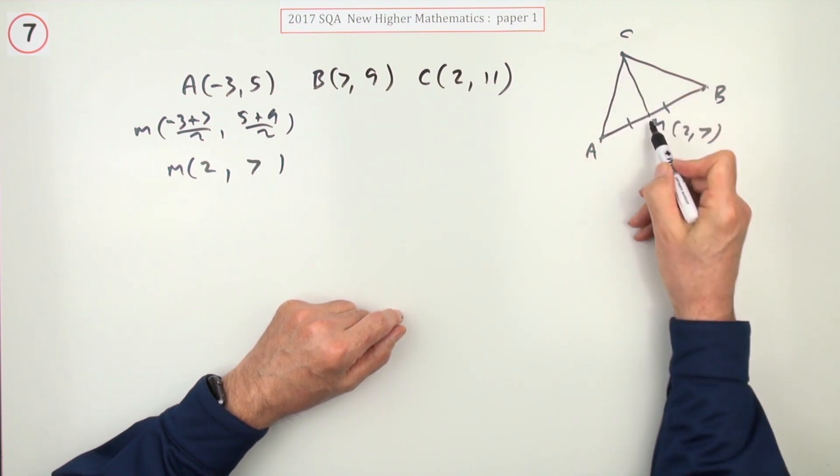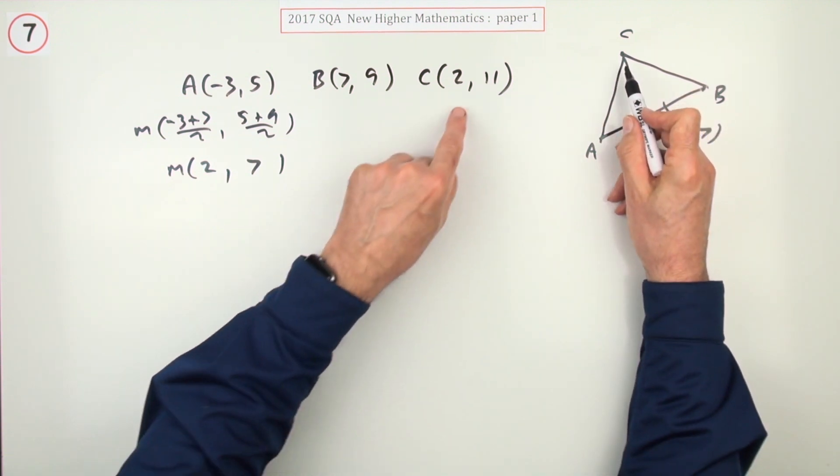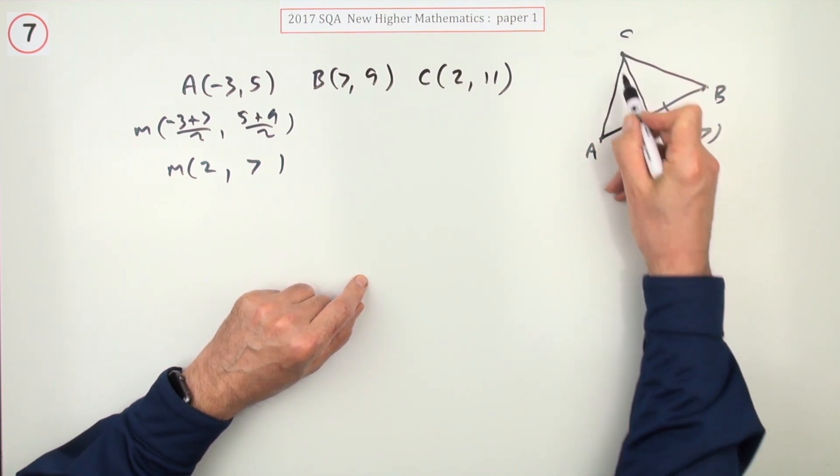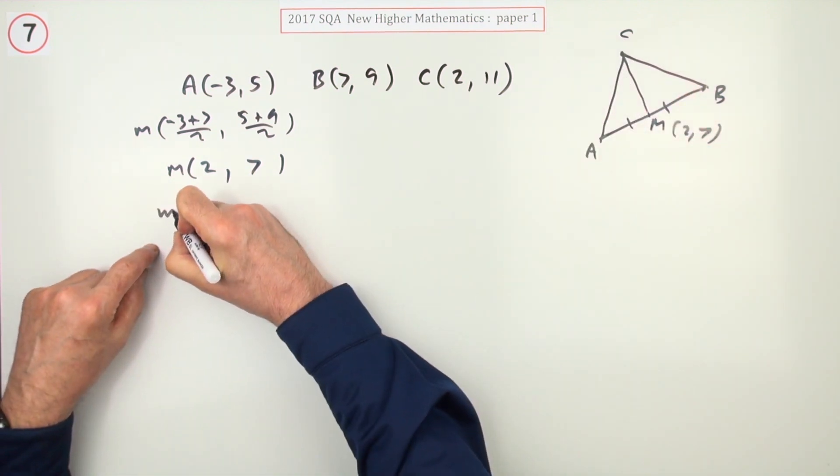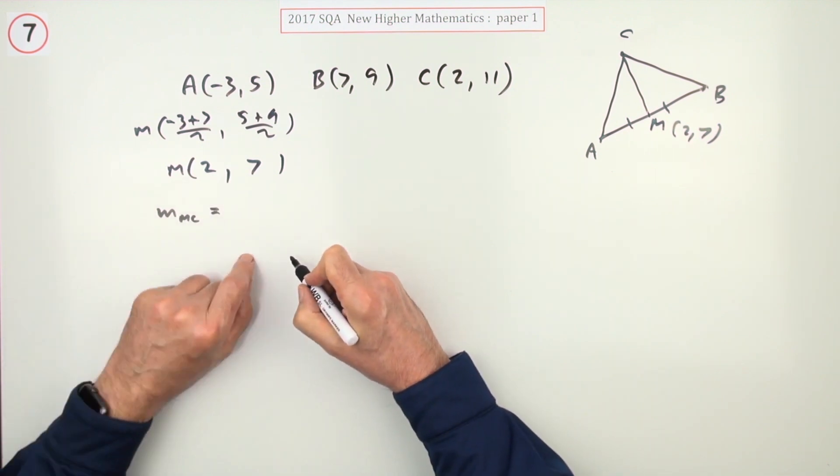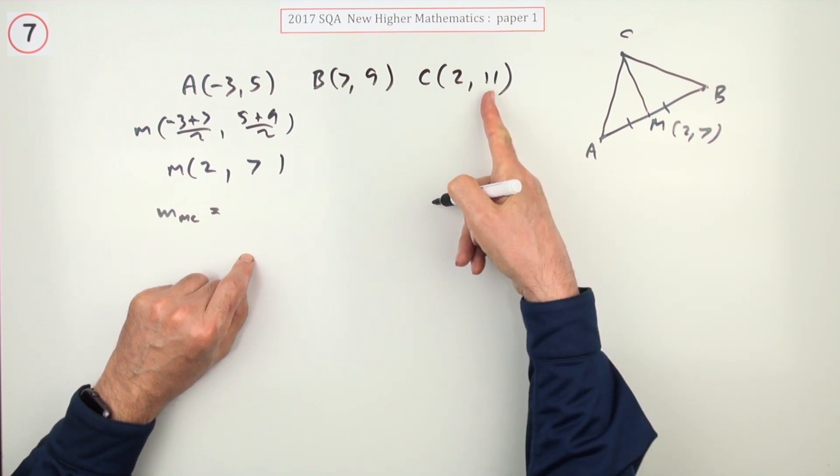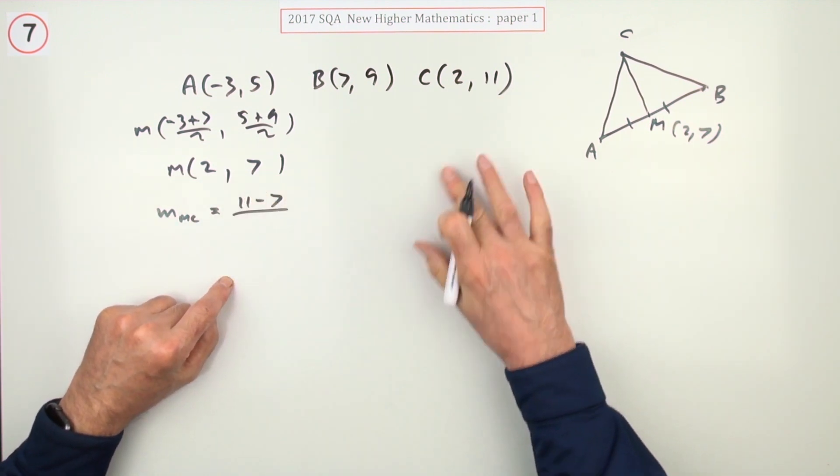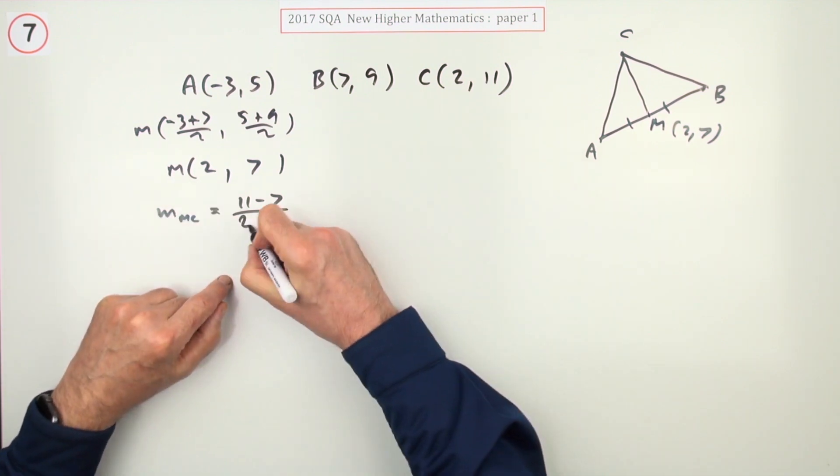Now to get the equation of that line, I need a point on it. Well, I had a point already, the point C. But you need its gradient, and you'll get the gradient because you know two points. So what's the gradient? Now I've called it M_C. Well, difference in the y-coordinates: 11 take away 7 over 2 take away 2.